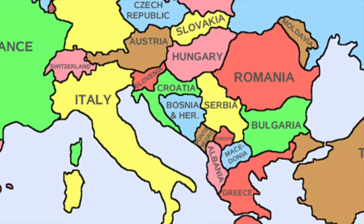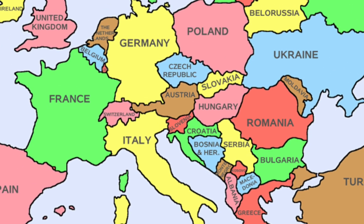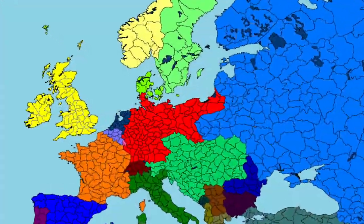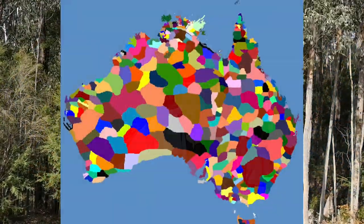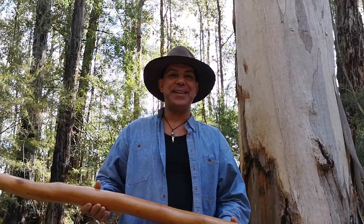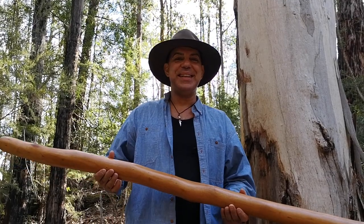Let's say we're looking at a map of Europe. On one end you've got Greece, in the middle you've got Germany, and on the other end you've got England. They're all considered European nations, but they all have completely different spiritual beliefs, different cultures, and different languages — and that's exactly how the Australian Aboriginal culture is structured.